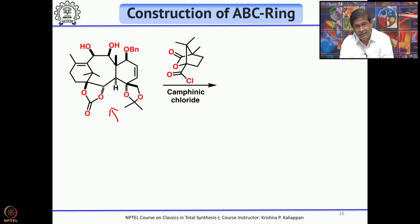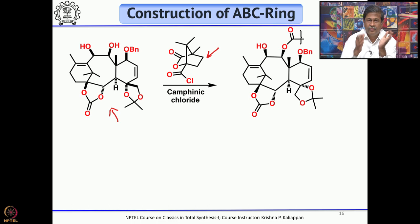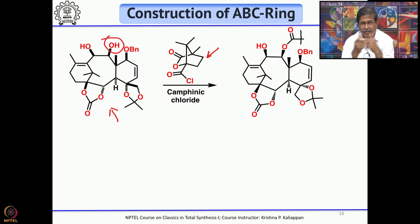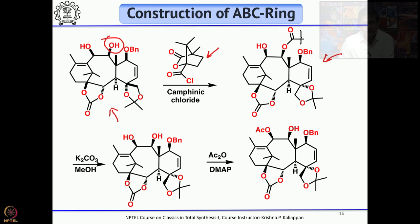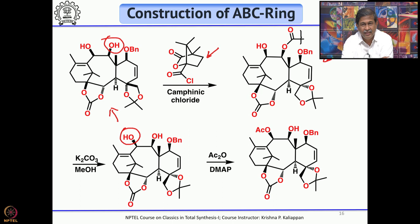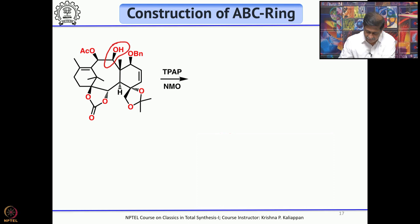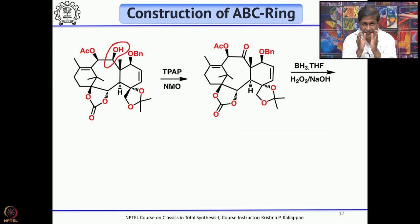Once you have the chiral diol, treatment with acetic anhydride and DMAP selectively acetylates the allylic alcohol. The secondary alcohol is then oxidized with TPAP to give the ketone — B ring is now fully functionalized. For the C ring, a hydroxyl group is needed, which is successfully introduced with borane–THF followed by oxidation. Removal of the acetonide gives a triol, and treatment with one equivalent of acetic anhydride/DMAP acetylates only the primary alcohol.